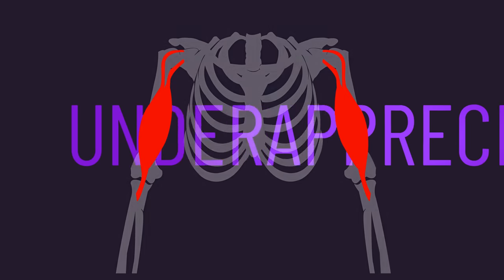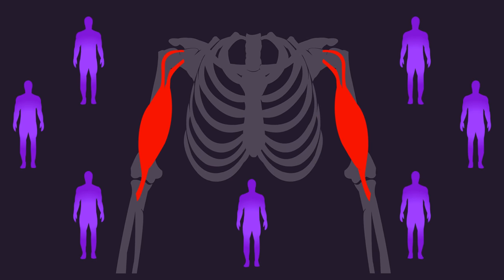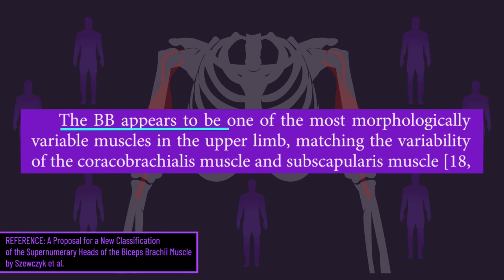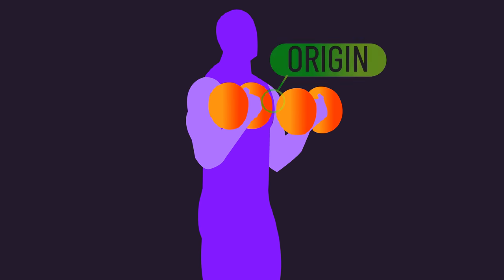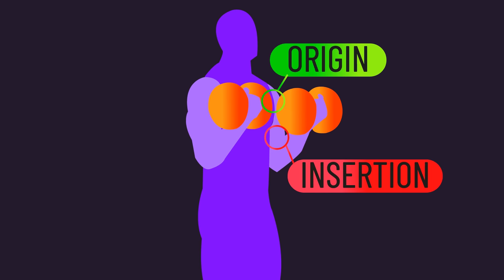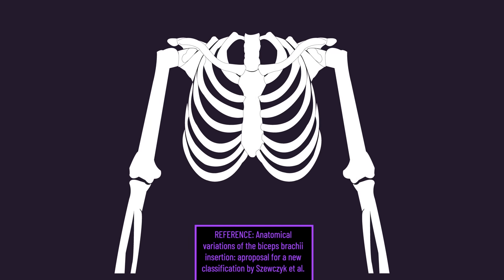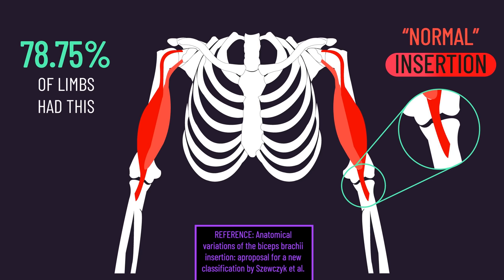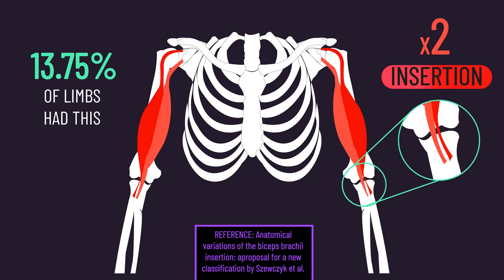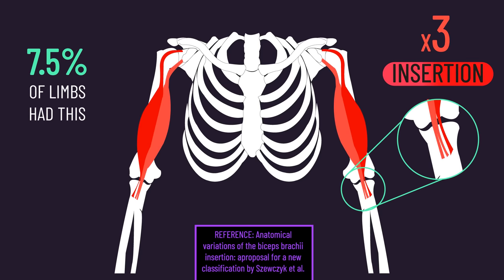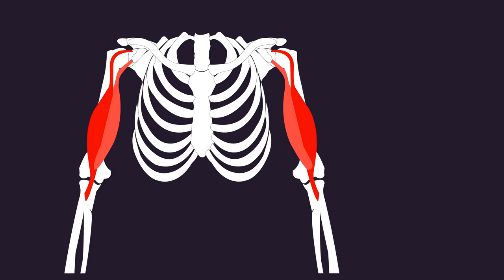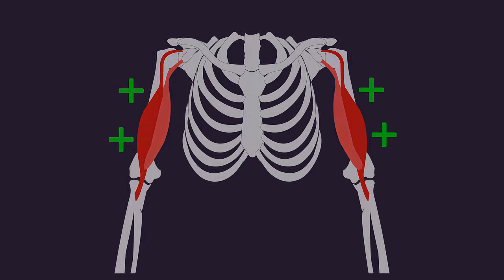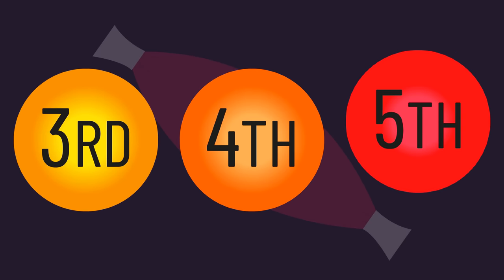A truly underappreciated fact is that biceps anatomy can substantially differ between people. As described in this paper, the biceps appears to be one of the most morphologically variable muscles in the upper limb. Not everyone has the exact same origins and insertions of the biceps' heads. Some people have a single tendon insertion on the radius, yet some have two tendon insertions, and others have three. Even more interestingly, some people have more than just a long and short biceps head — there are people with a third, fourth, and even fifth biceps head.